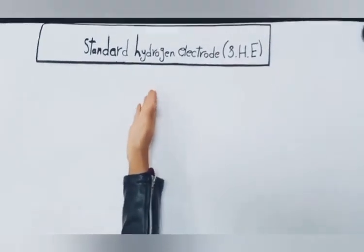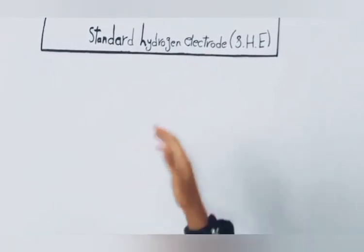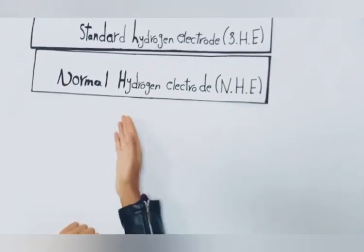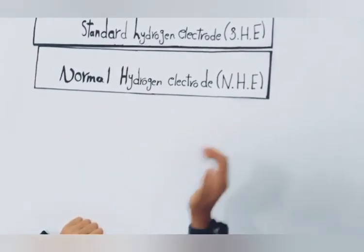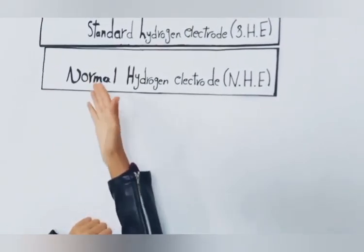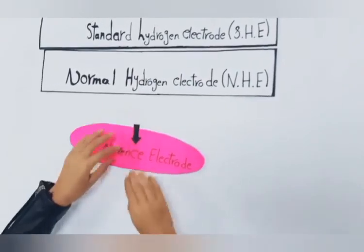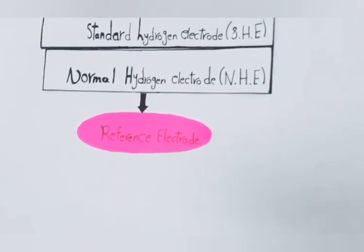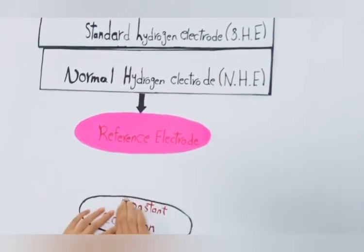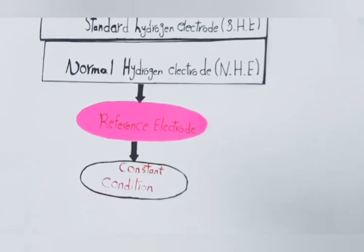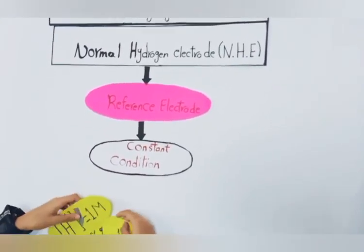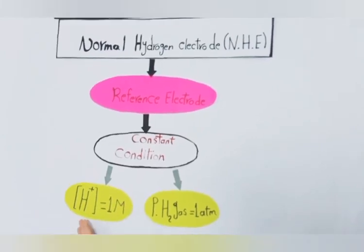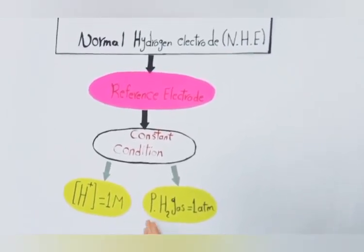Today we are going to talk about the standard hydrogen electrode, abbreviated as SHE, also known as the normal hydrogen electrode (NHE). First of all, what is the standard hydrogen electrode? It is a reference electrode. It is called a reference electrode because it is used under constant conditions: the concentration of hydrogen ion equals one molar, and the pressure of hydrogen gas equals one atmosphere.